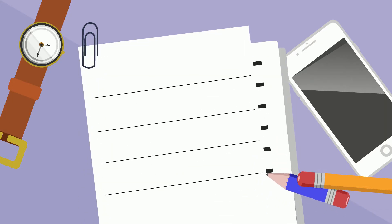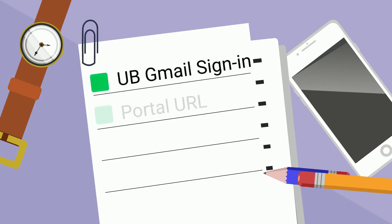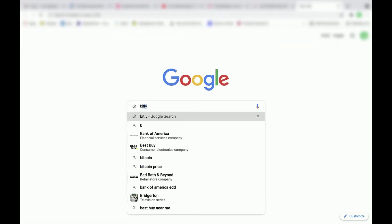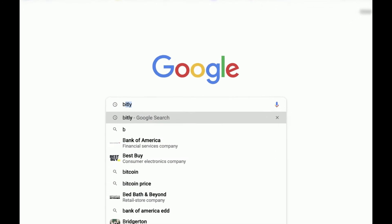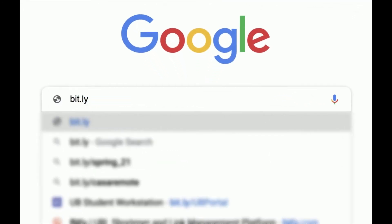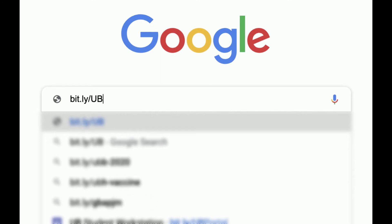Head over to our Upward Bound Portal in two easy steps. First, and most importantly, you need to make sure you're logged in to your UB Gmail account. Second, head over to our UB Portal using bid.ly backslash UB Portal. Again, that is bid.ly backslash UB Portal.